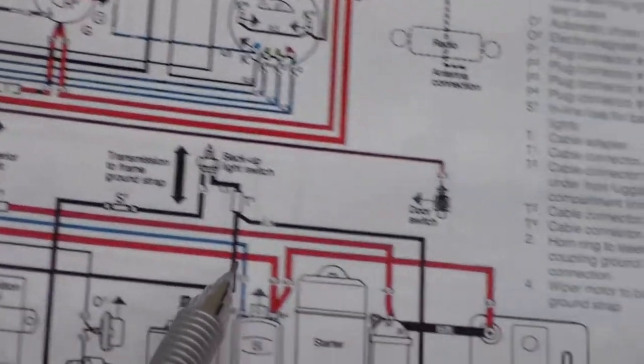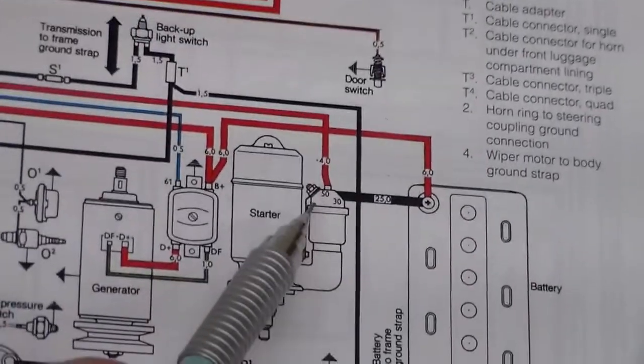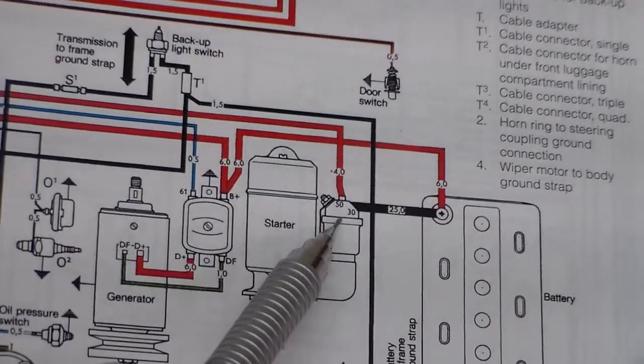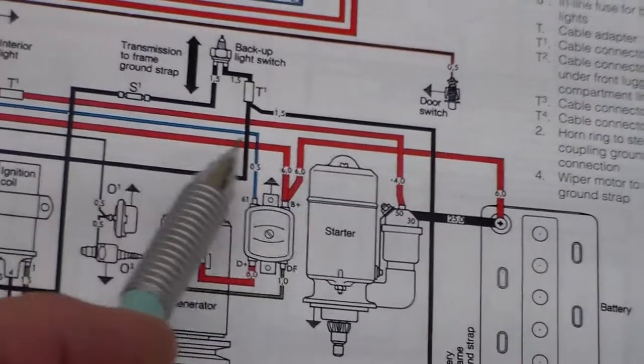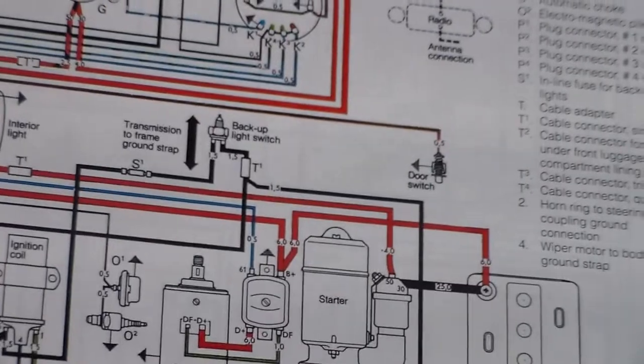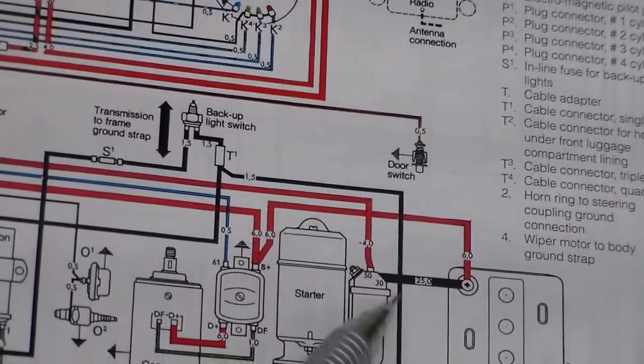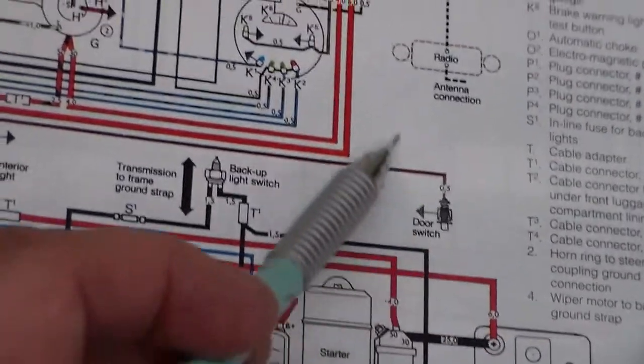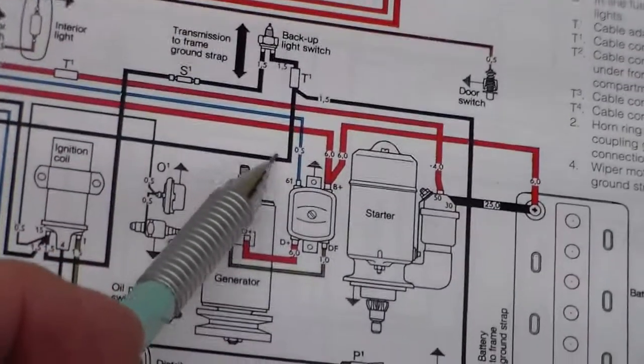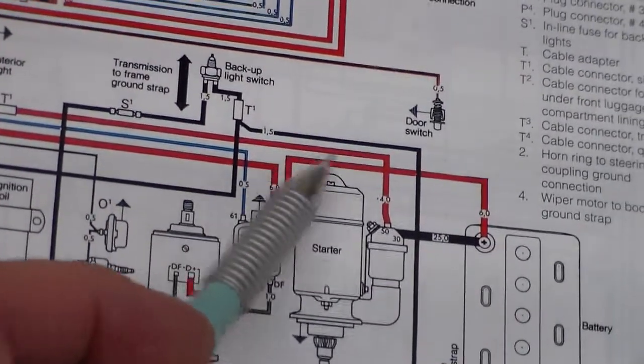Goes through our connector. Another connector. And goes to our starter solenoid. What didn't you see in this circuit? What you didn't see is a fuse. So we have all this wire going from the back of the car up to the front and back to the back of the car with no fuse on it.